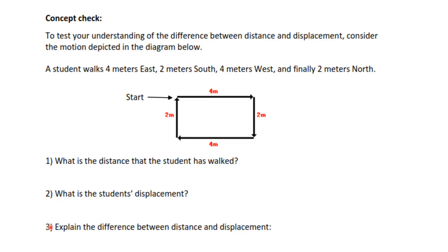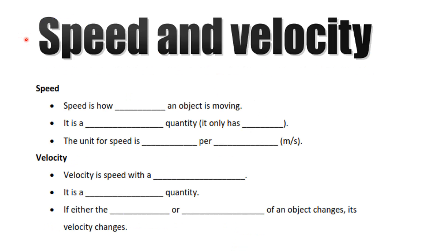Distance is how far you've moved and it's a scalar quantity. Displacement is how far you've moved from your original position and it's a vector quantity. Next is speed and velocity. Speed is how fast an object is moving — it is a scalar quantity with only size, and the unit for speed is meters per second (m/s). Velocity is speed with a direction, making it a vector quantity. If either the speed or direction of an object changes, its velocity changes.